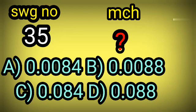Next, SWG number 20/35, MCH number — question mark. Choose the correct answer: option A 0.0084, option B 0.0088, option C 0.084, option D 0.088. Your correct answer: option A, 0.0084.